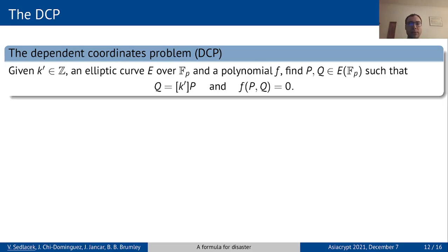We call this the dependent coordinates problem, or just DCP for short. And solving the DCP allows us to construct our oracles and recover the private key.